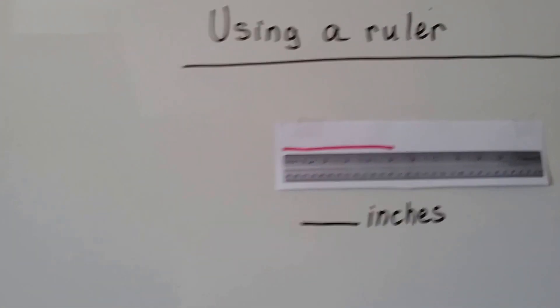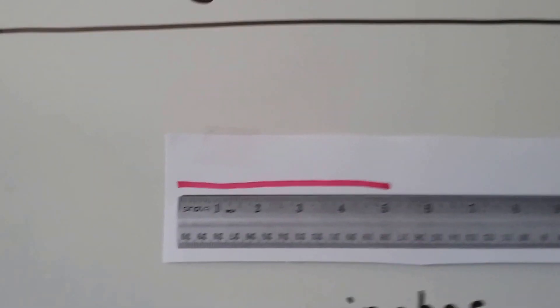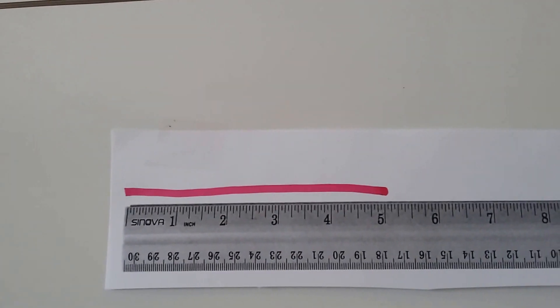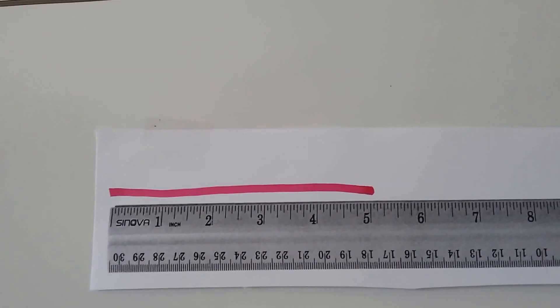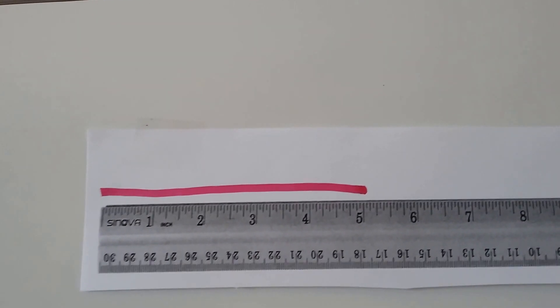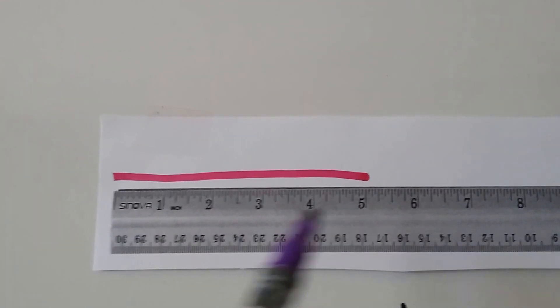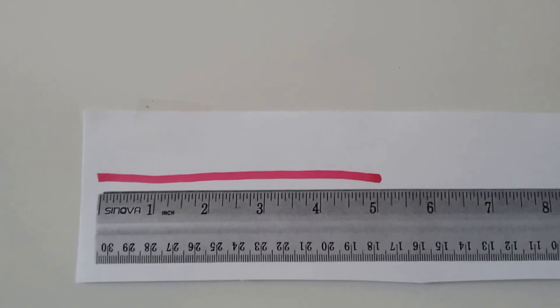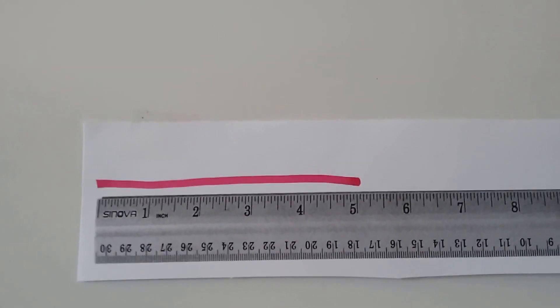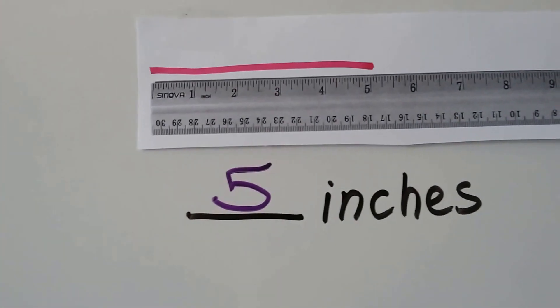Let's use a ruler and see if we can measure these colorful lines. Here we have a ruler and a red line. Can you see about how many inches that red line is? These are the inches right here — we can see it even says 'inch' right here. If you said five inches, you're right — it's about five inches.